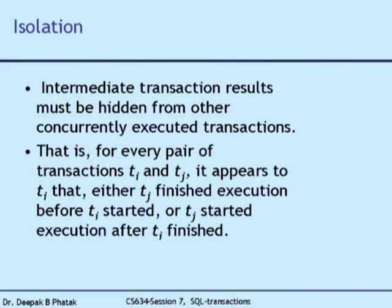Logically, the consistent state is defined such that if there are 10 transactions affecting common data, I must show they are executing in isolation in some sequence. Isolation means: with 10 transactions, one executes, the next starts only after it completes, and so on. The database should be consistent at the end of all 10. This is the isolation requirement — intermediate transaction results must be hidden from other concurrently executing transactions.